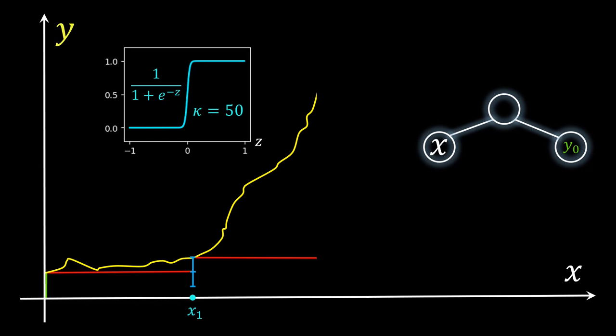In the proof however, we assume for simplicity that kappa goes towards infinity. Then the function gives us a vertical ascent, which makes arguing simpler. Now let's try to find out how the weights of the new neuron should be, such that we achieve our goal.